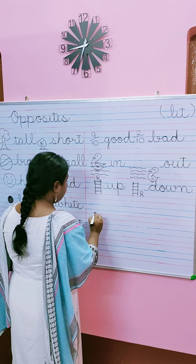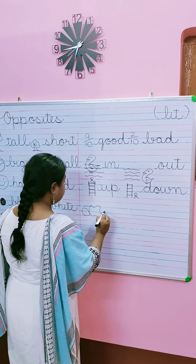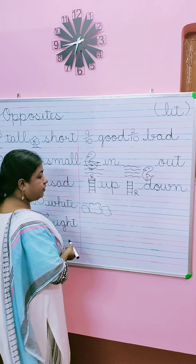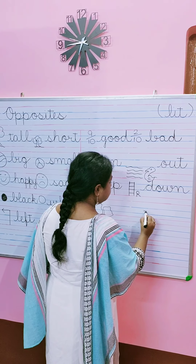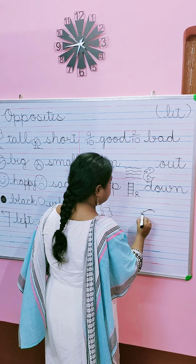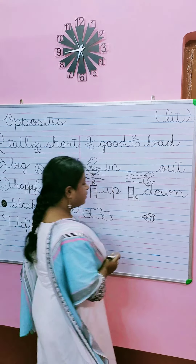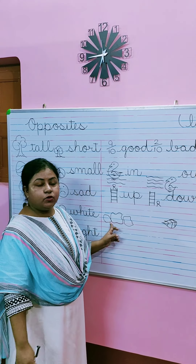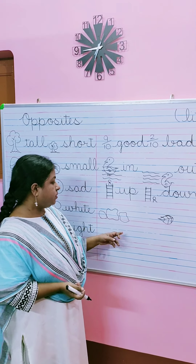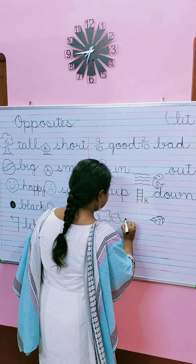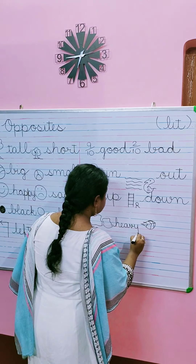Now I draw a few rocks. Rocks are very heavy. And I draw a leaf. So rocks are very heavy, you can't lift them up easily. And a leaf is very light, we can easily pick it up. So we will write here heavy and light.